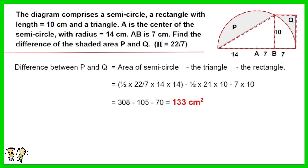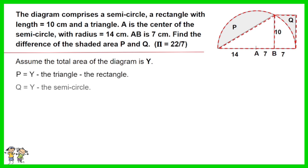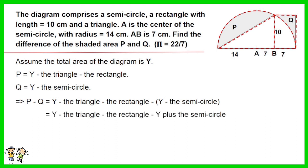In case you wonder how the above equation is derived, here is the detailed working. Assume the total area of the diagram is Y. P equals Y minus the triangle minus the rectangle. Q equals Y minus the semicircle. Thus, P minus Q equals Y minus the triangle minus the rectangle minus Y plus the semicircle. Work out the equation, you have semicircle minus the triangle minus the rectangle.